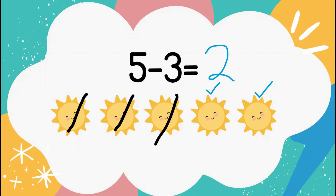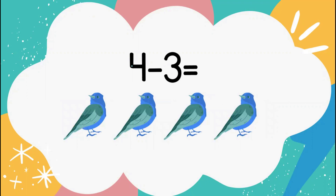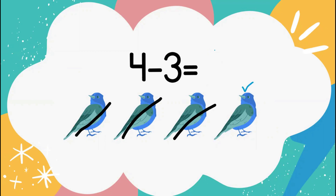Let's take a look at our next problem. We read this: 4 minus 3 equals. Down below I have a picture of 4 birds. Let's cross off 3 birds to see how many we're left with. How many birds are we left with? Count with Miss K: 1. Good job. We had 4 birds, we took away 3, and now we're left with 1 bird remaining.